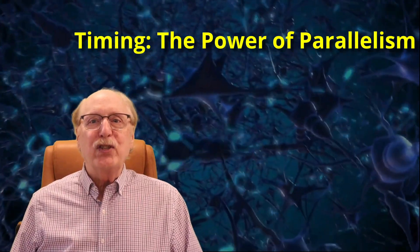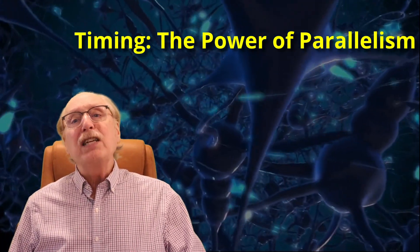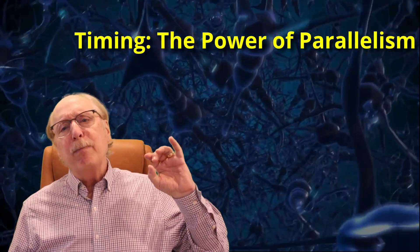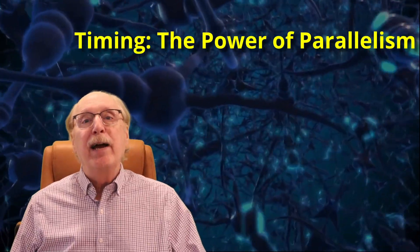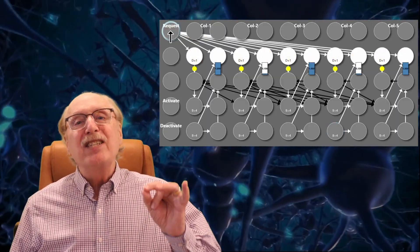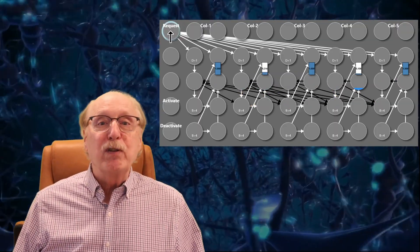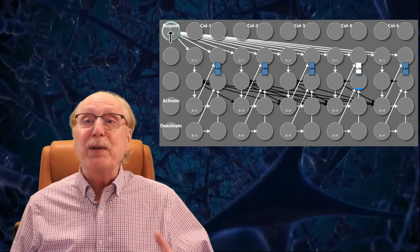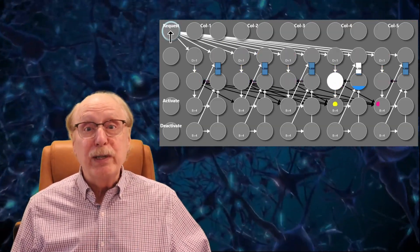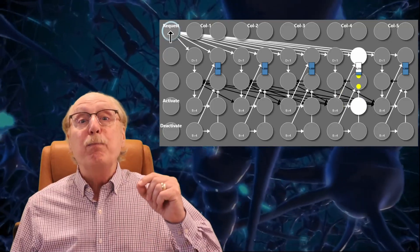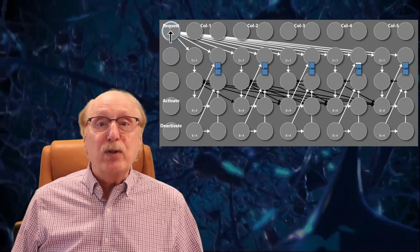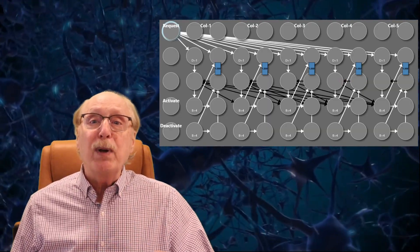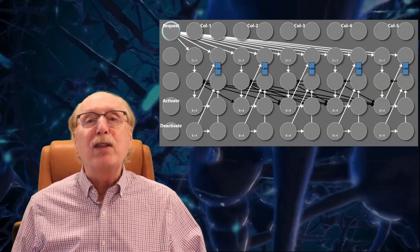Here's what makes this system really amazing: the whole process takes just five milliseconds. And it doesn't matter how many columns are in play — five, ten, a thousand — the system still picks the right one in the same amount of time. Why? Because it's parallel. All columns receive the request at the same time, and the selection process is handled locally through fast synaptic interactions. No loops, no serial scanning. This is one of the brain's biggest advantages over traditional computers — biological neural systems aren't just powerful, they're fast because they do everything at once.